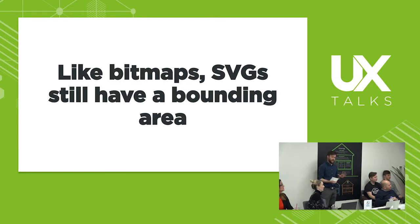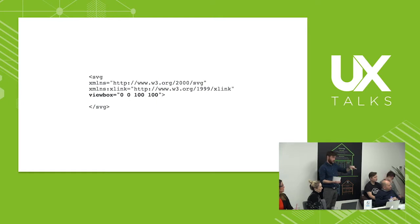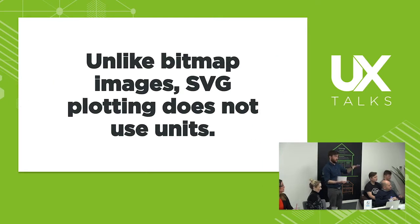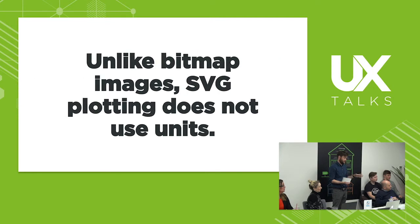Like bitmaps, SVGs still have a bounding area. When we say with a bitmap it's 100 pixels wide by 100 pixels high, we need to do the same with an SVG. SVG uses viewBox to do that. This viewBox defines the coordinate system — you're plotting points on a map. It goes from 0 on the X, 0 on the Y, to 100 by 100. So you've got a 100-point square. Because unlike bitmap images, SVG plotting does not use units — there's no 'px' on this, and that's one of the reasons they scale.